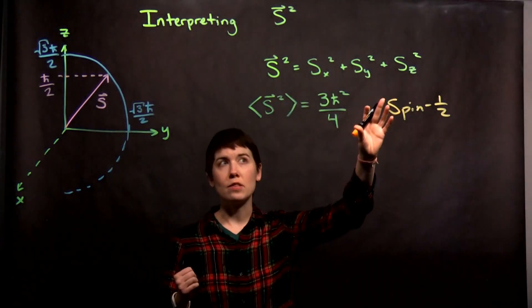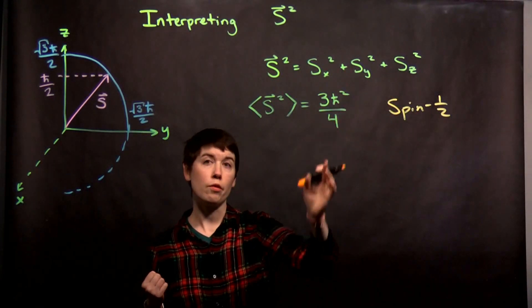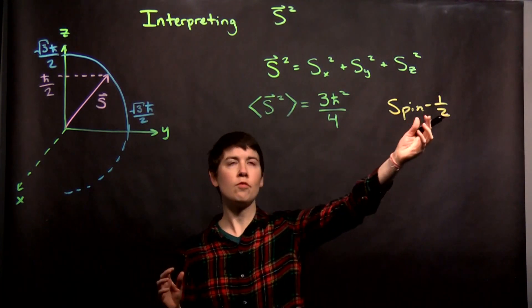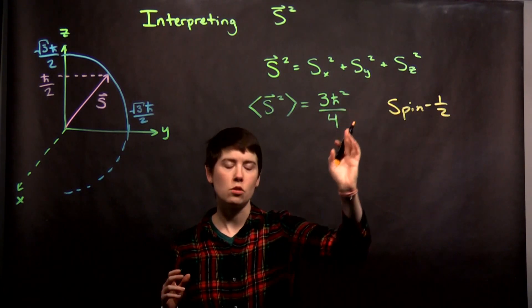Since this operator ends up being equal to 3ℏ² over 4 times the identity matrix, for any spin one-half particle, we get this expectation value.